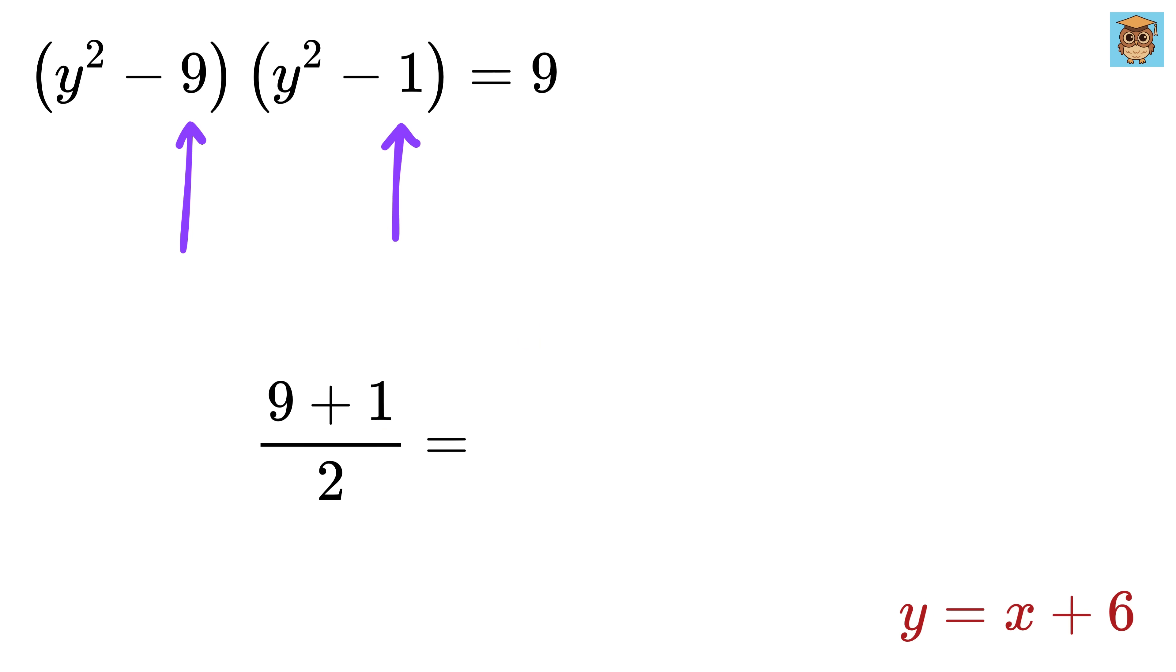So let y squared equals r plus 5. Therefore y squared minus 9 will be r plus 5 minus 9, or r minus 4, and y squared minus 1 equals r plus 5 minus 1, or r plus 4. Thus this is again of the form a minus b times a plus b.